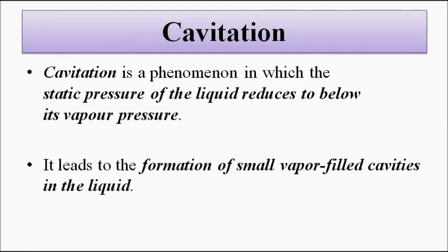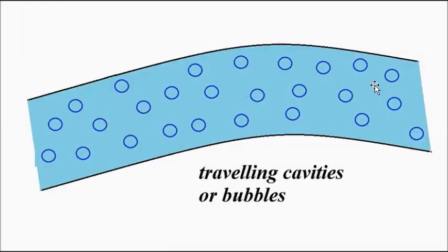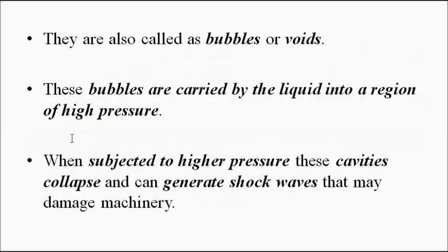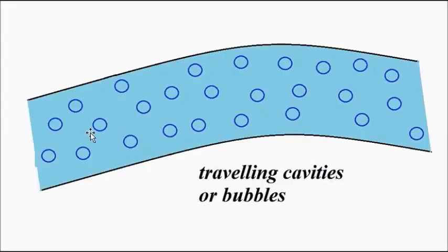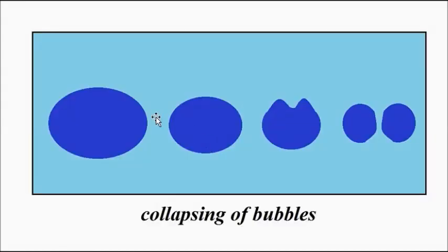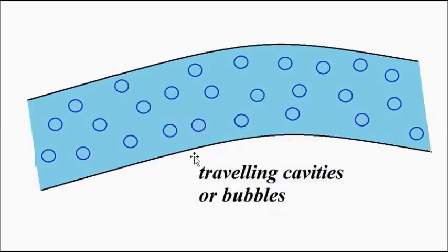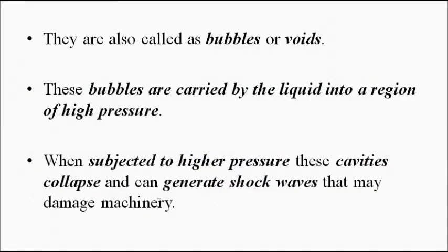Cavitation leads to the formation of small vapor-filled cavities in the liquid, which move with the liquid as bubbles. These bubbles are carried by the liquid from a low pressure region to a high pressure region, where they finally collapse. Because of this collapsing of bubbles or voids, shock waves are produced. This is very important for hydraulic machinery such as turbines, blades, pistons, and rams — cavitation can cause damage to hydraulic equipment.